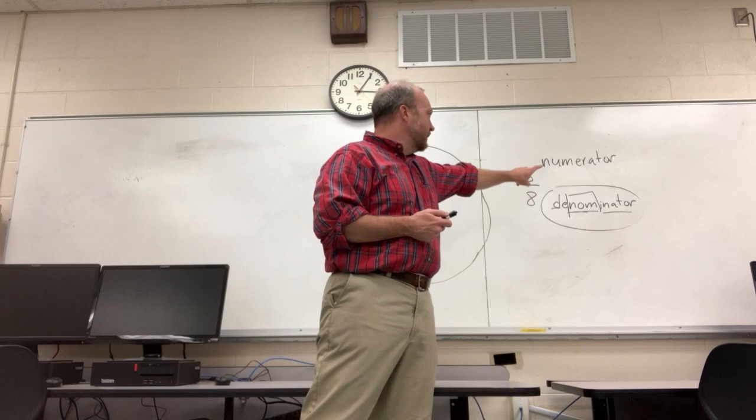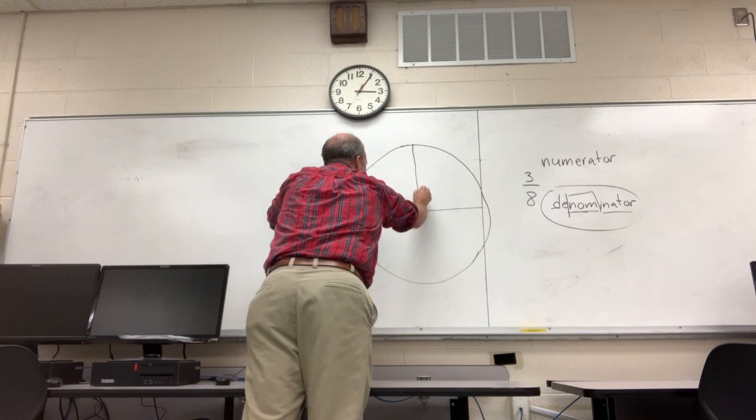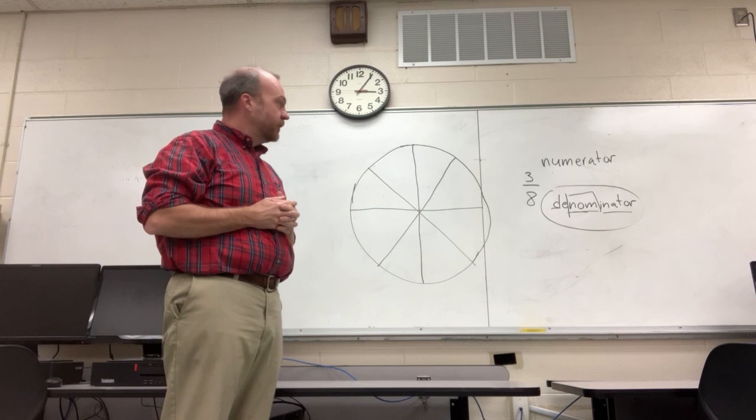Now in this example fraction, the denominator is eights. So I'm just going to come over here and I'm going to cut this circle into eight pieces. Now mine's not perfect, but pretty close, close enough. And the names of all of these pieces, each of these pieces is an eighth. That's the name of the type of pieces.